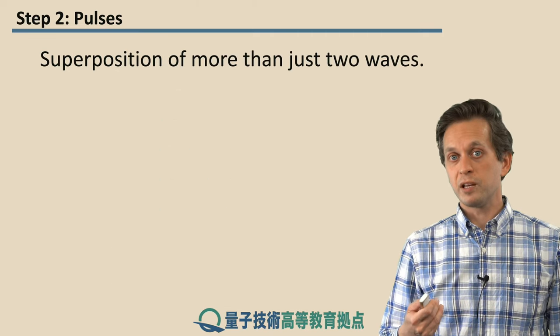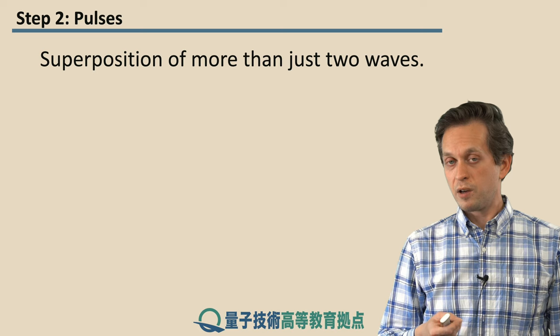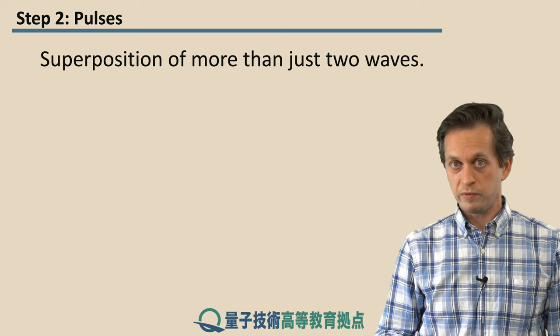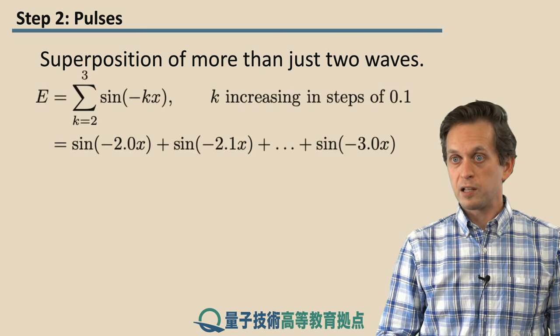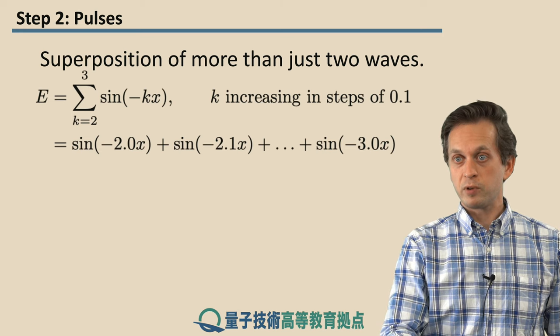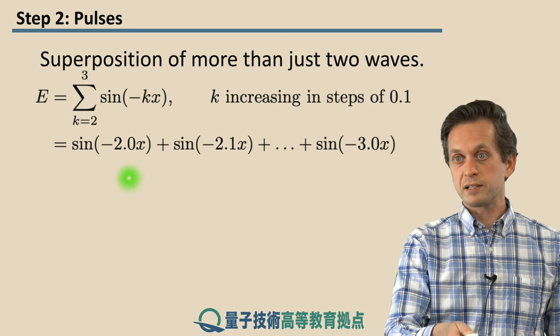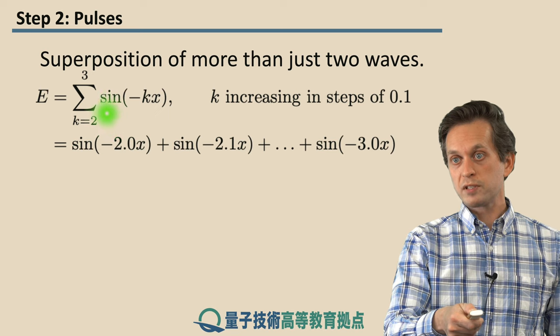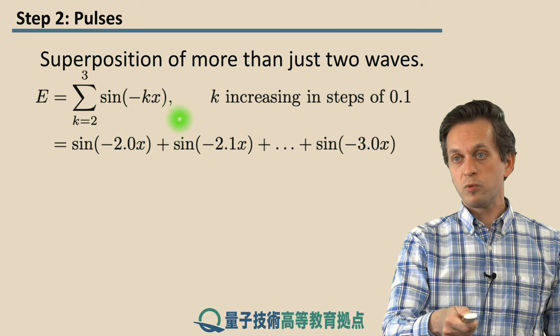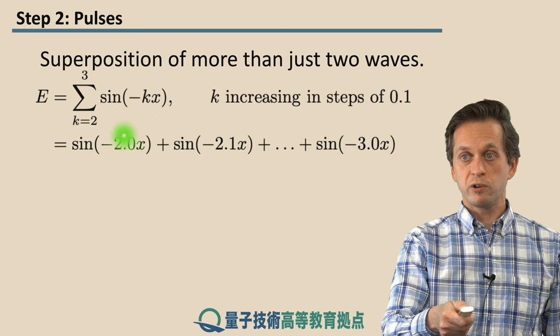And so far we have been looking at superposition of only two waves. What happens if we consider superposition of more than two waves? Let's consider a particular example, where our superposition is given as a sum of some very simple waves. Here we have a frozen time and basically set t equals to zero.